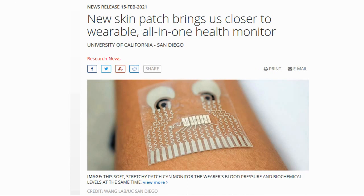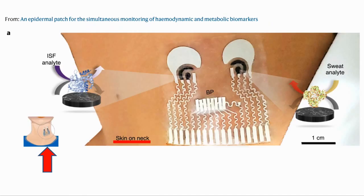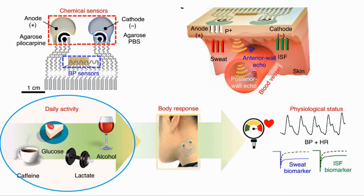A new skin patch brings us closer to a wearable all-in-one health monitor. Engineers at the University of California, San Diego have developed a soft, stretchy skin patch the size of a postage stamp that can be worn on the neck to continuously track blood pressure and heart rate, while also measuring the wearer's level of glucose as well as lactate, alcohol, or caffeine. It is the first wearable device that monitors cardiovascular signals and multiple biochemical levels in the human body at the same time.